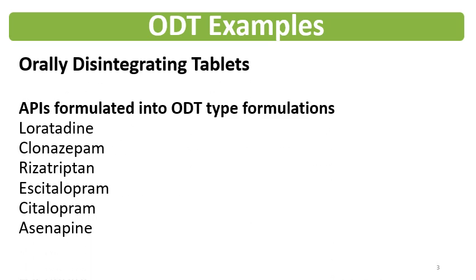The examples of ODT formulations are many. Some ODT formulations contain Loratadine or Clonazepam, then Rizatriptan, Escitalopram, Citalopram, and Asenapine. These APIs belong to different categories — some are anti-psychotic, some are antihistaminic or anti-allergic, some are anti-depressant. So many types of disease conditions can be treated with ODT type of formulations.